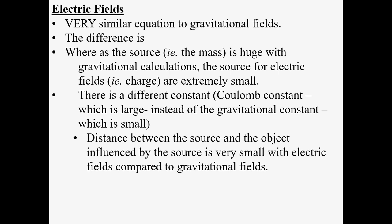It's very similar to gravitational fields with some differences. In the case of gravitational fields, it was a mass generating that field — usually a fairly large mass, like the mass of a planet or a star. In the case of electric fields, the charges are usually really small. There's also a different constant: Coulomb's constant for electric fields versus the gravitational constant. The gravitational constant was really, really small — 6.67 times 10 to the negative 11 — while Coulomb's constant is a really, really big number: 8.99 times 10 to the 9.